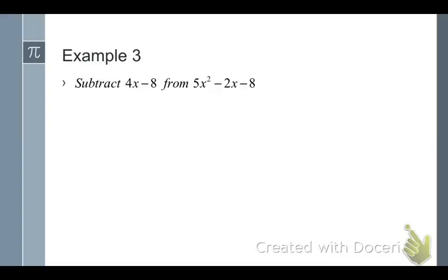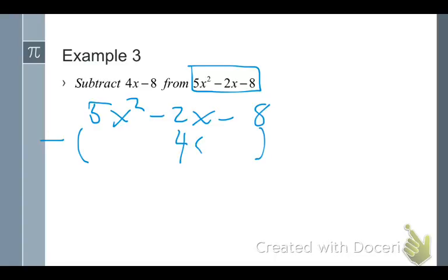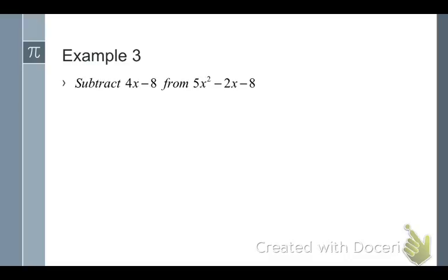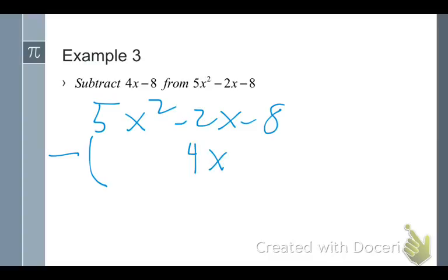So this one says subtract 4x minus 8 from 5x squared minus 2x minus 8. And I'm going to line this up vertically and show you how you would manage that. I'm going to put the 4x there, the minus 8 there. I wrote 4 times 8. Sorry, let me erase that. And rewrite it. Oh no! I lost the whole thing. Alright. So I'm going to write it as this. And I need a pen to write. That's what I meant to touch. 5x squared minus 2x minus 8. Minus. And I'm going to line these up. But I have to realize this parenthesis here. 4x minus 8. So I do that.